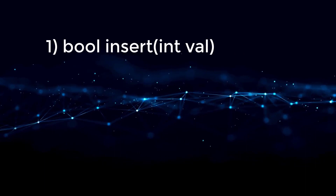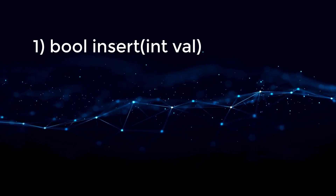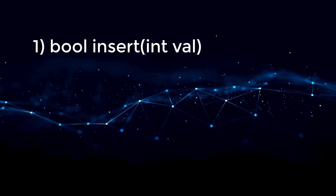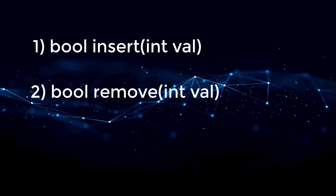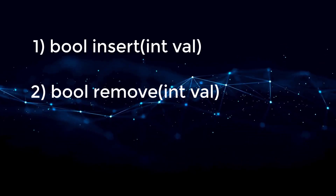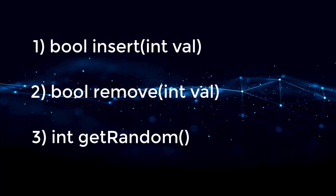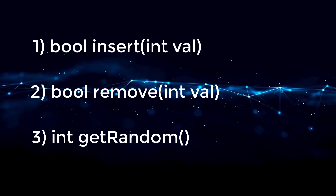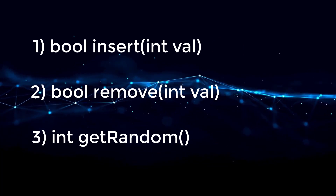For this design problem, we have to implement three different functions. The first function is called insert — it will insert an item val into a set if it is not present, returning true. If it is already present, we return false. The second function is called remove — we remove an item val from the set, returning true if present and false if not. The last function is get random, which returns a random element where each element must have equal probability of being chosen. The goal is to have all functions run in O(1) — constant time complexity.